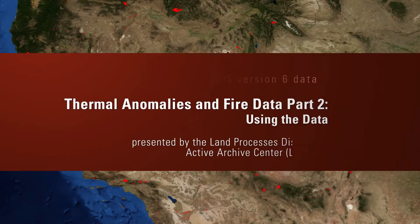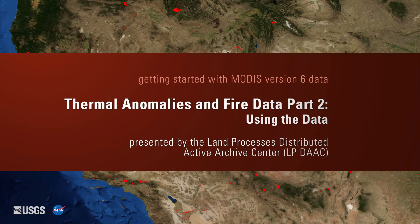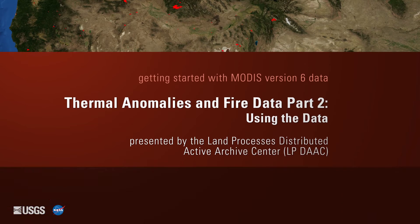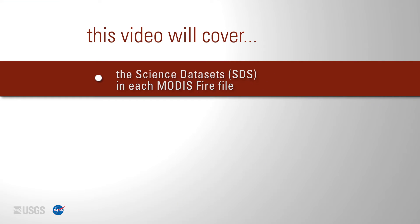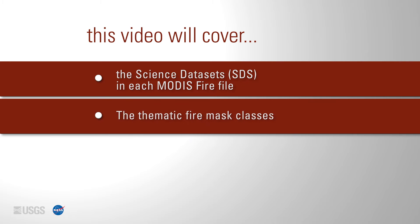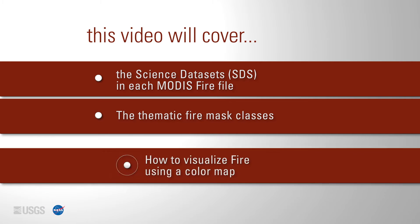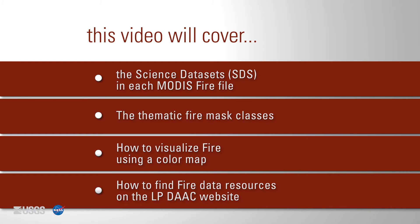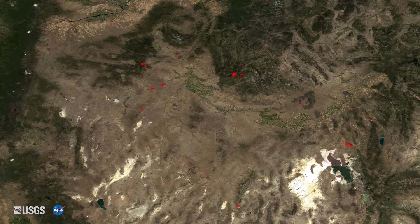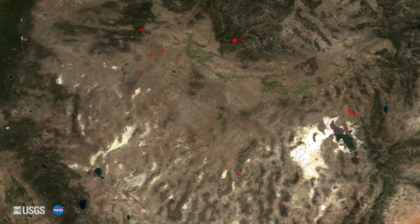Getting started with MODIS version 6 thermal anomalies and fire data, part 2, using the data presented by the Land Processes Distributed Active Archive Center or LPDAAC. This is part two of the getting started with MODIS version 6 thermal anomalies and fire data video series. This video will cover the science datasets or SDSs in each MODIS thermal anomalies and fire file, the thematic fire mask classes, how to visualize fire using a color map, and how to find resources for working with fire data on the LPDAAC website.